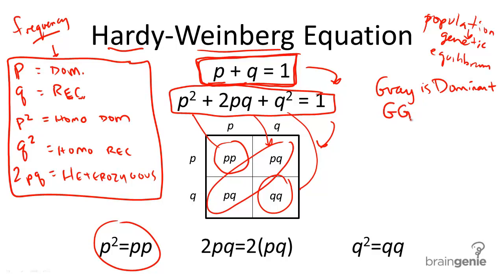So, we know big G, big G, homozygous dominant. The frequency in the population is 81%. The question here would be, what percentage of the population is gray?